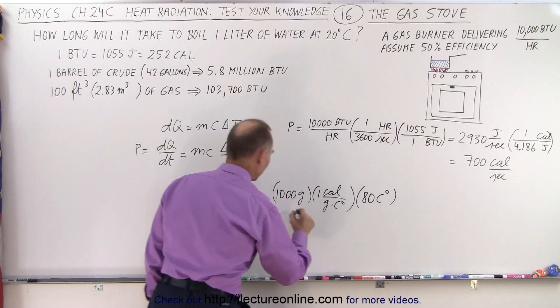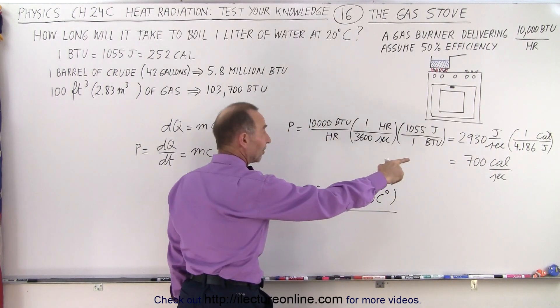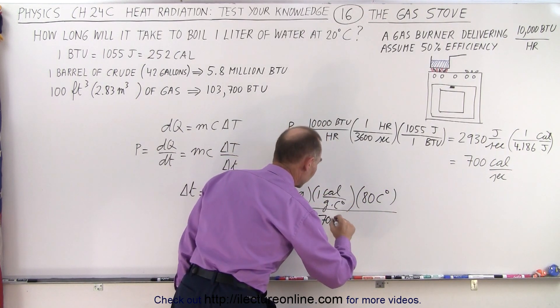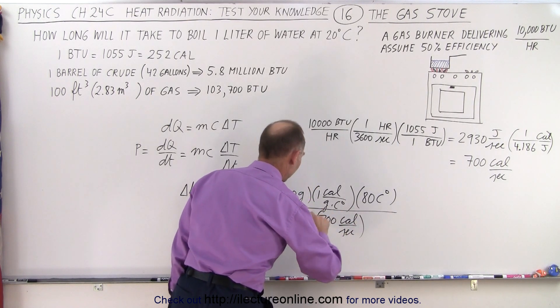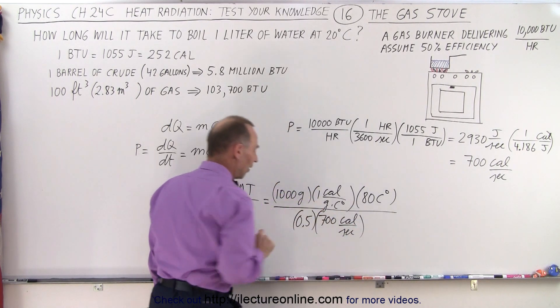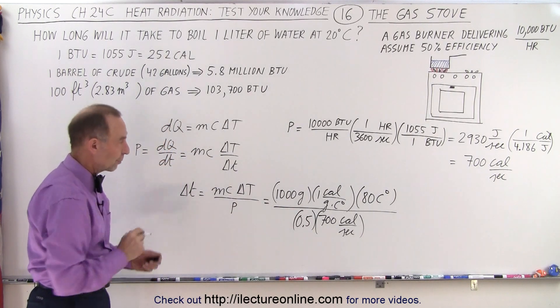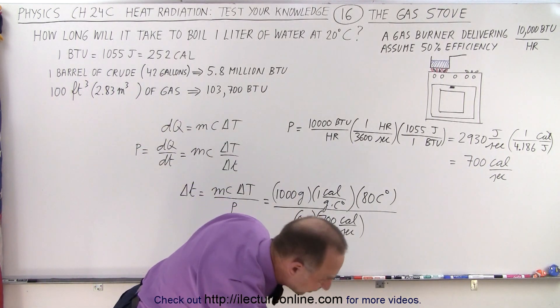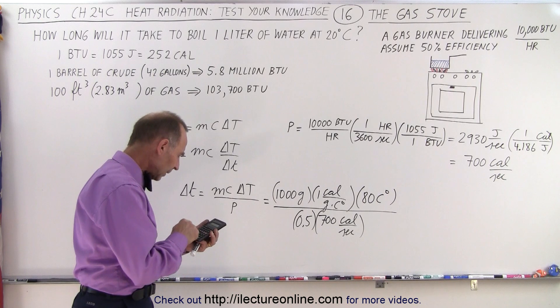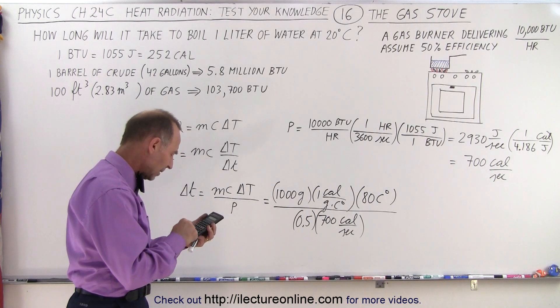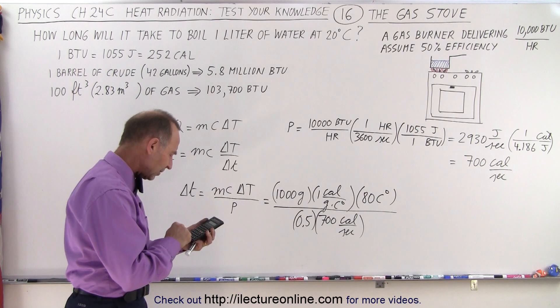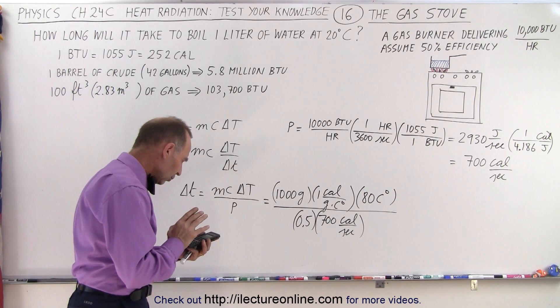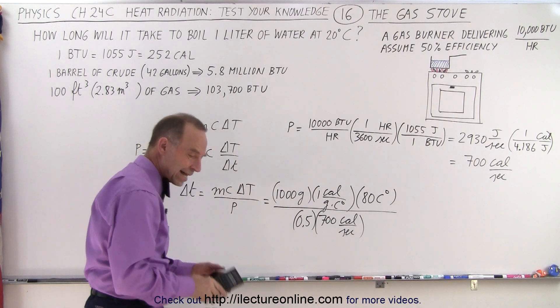And divide the whole thing by 700 calories per second. But then, with the efficiency, we have to multiply it times a factor of 0.5 because it's only 50% efficient. All right. What does that equal to?